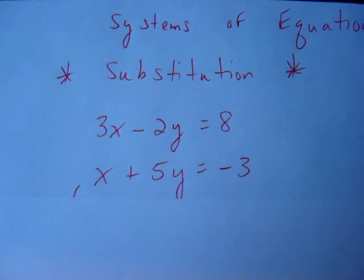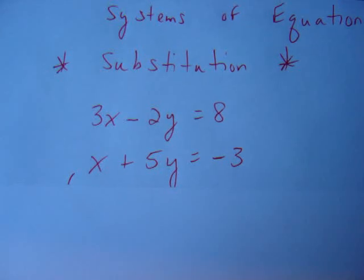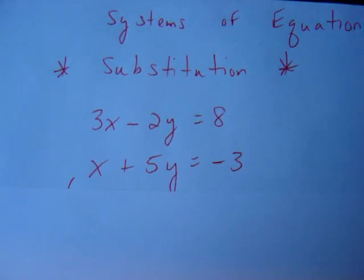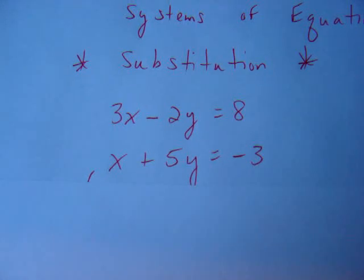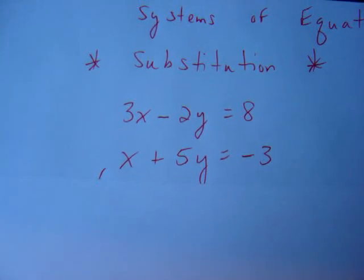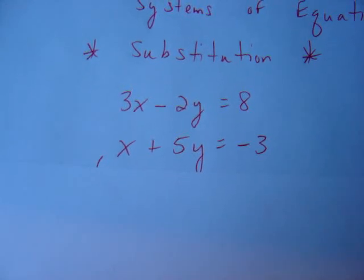Taking a look at our two equations in the system, we need to be clever about which variable is easier to get by itself. We want to work smarter, not harder. If we have a variable with a coefficient of 1, that's a lot better for us because we don't have to do any dividing to get it by itself.